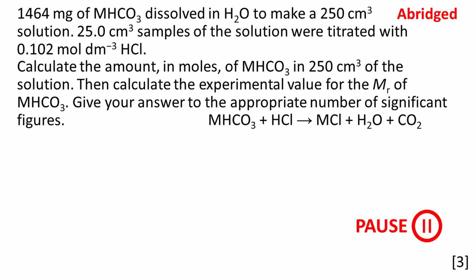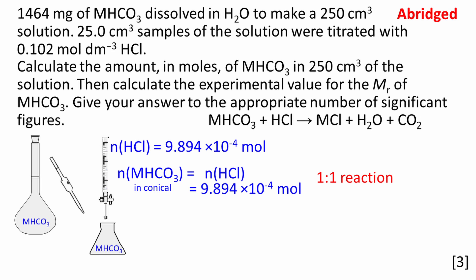Here's the next part of the question. Calculate the amount in moles of MHCO3 in 250 cm³ of the solution. Then calculate the experimental value for the MR of MHCO3. Give your answer to the appropriate number of significant figures. We can see from the balanced equation that this is a one-to-one reaction. One mole of HCl reacts with one mole of MHCO3. At the point of neutralization, the amount of MHCO3 in the conical flask is equal to the amount of HCl delivered from the burette, which is also 9.894 × 10⁻⁴ moles.